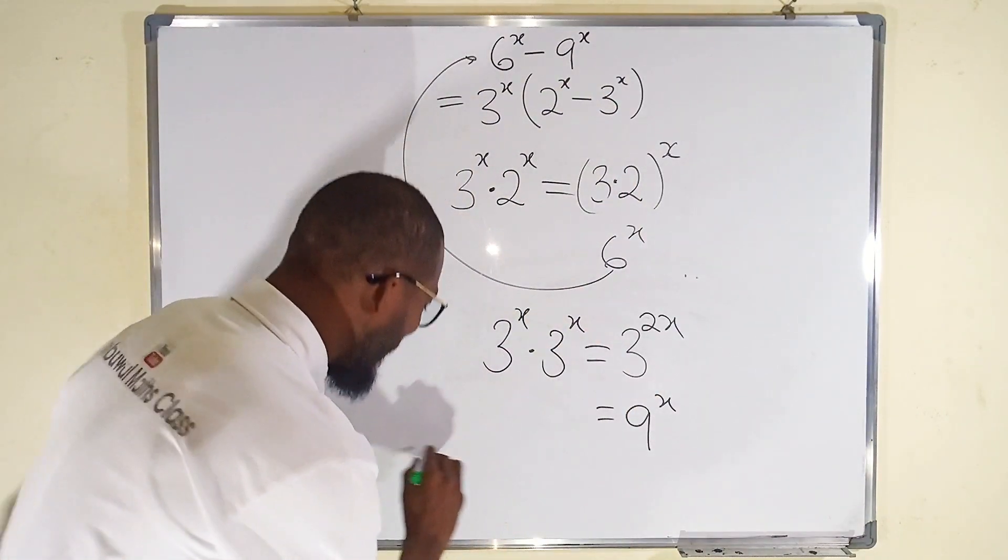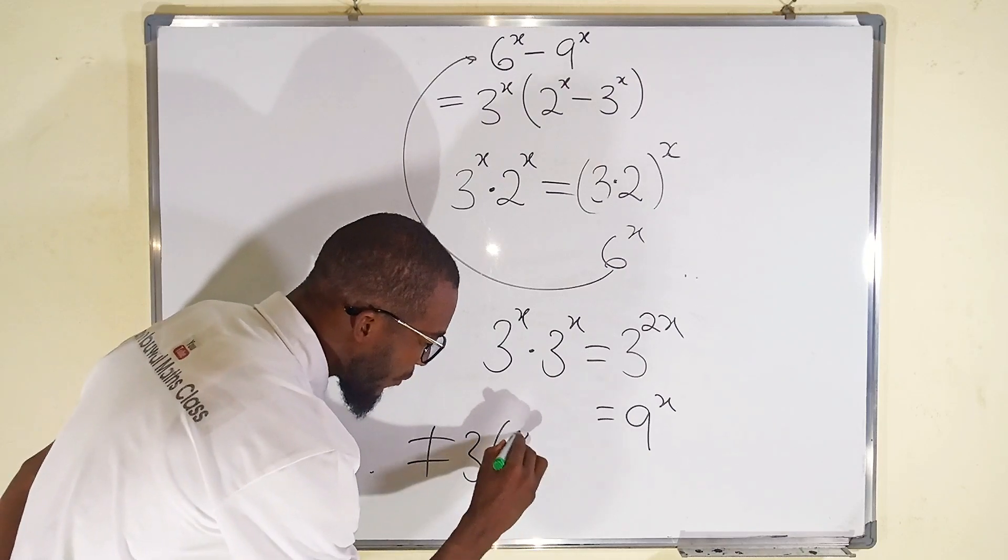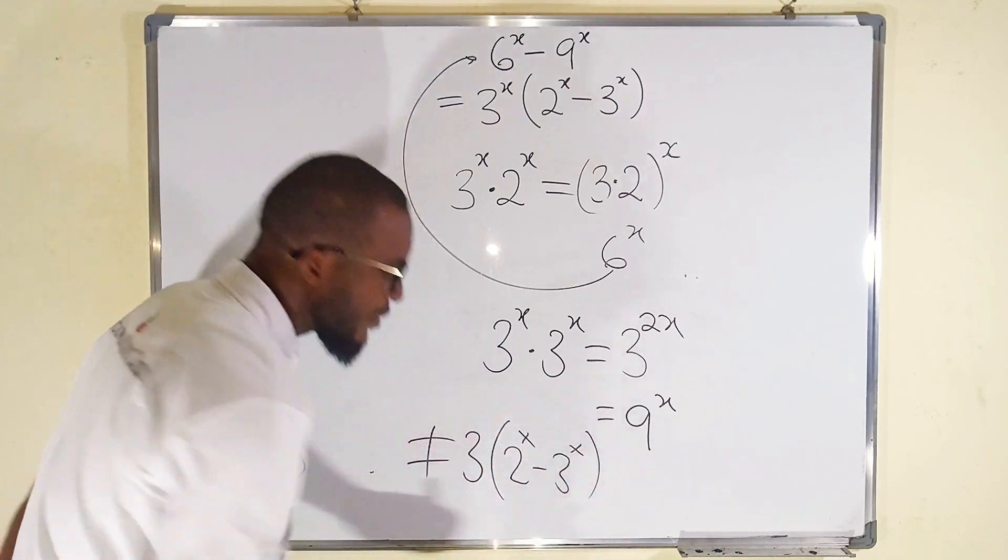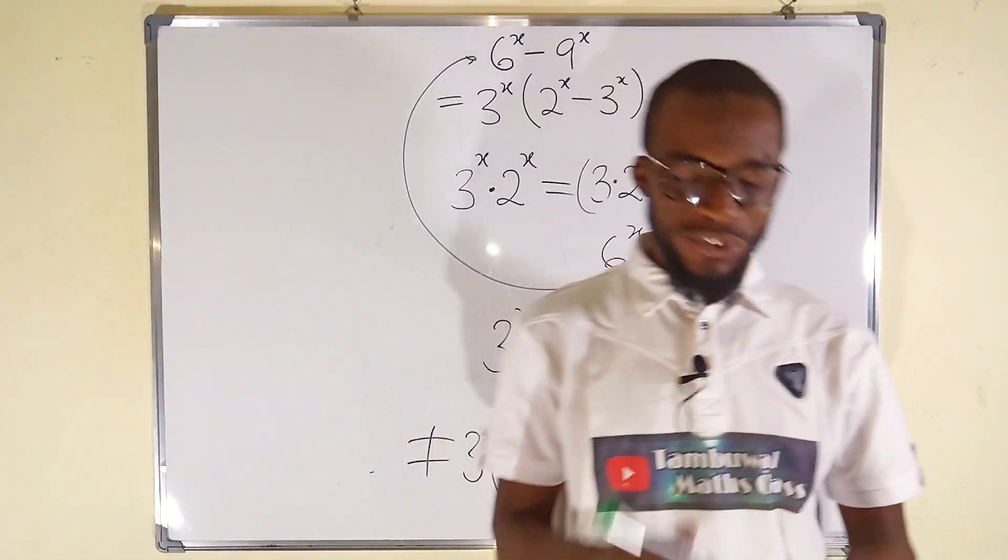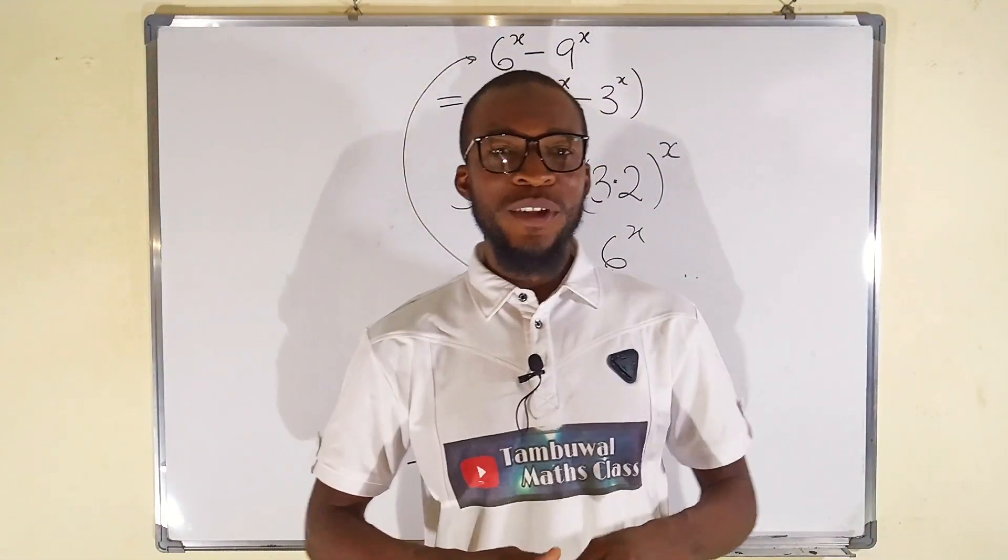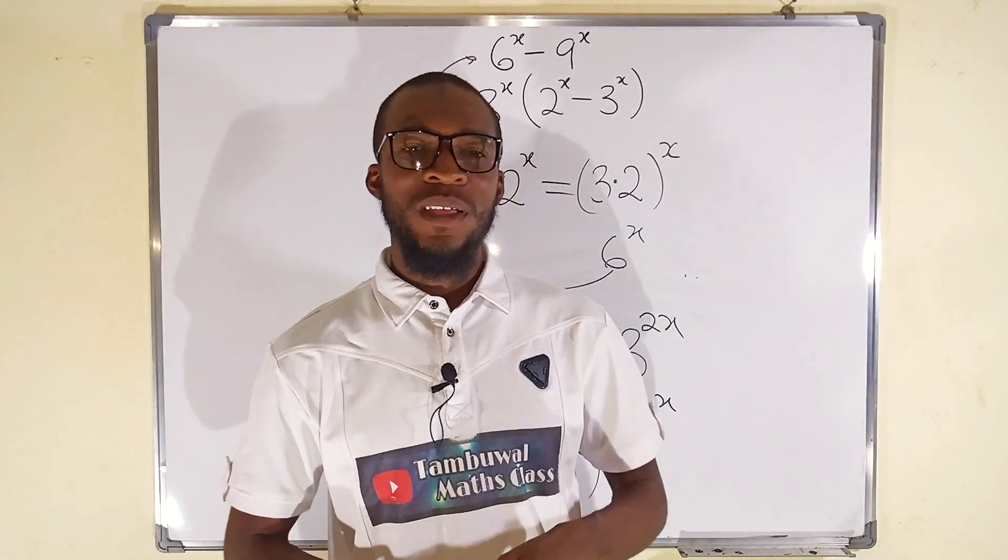So you should know that it is not 3 multiplied by 2^x minus 3^x. This is not true. And this is all I have for you today. Thank you for watching. Do share with your learning colleagues and don't forget to subscribe to my YouTube channel for more exciting videos. Bye bye.